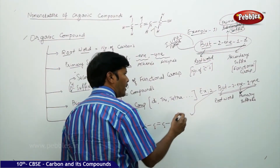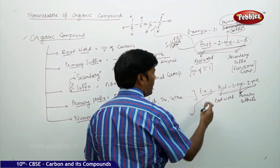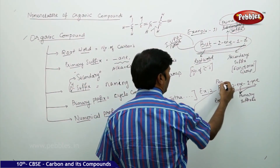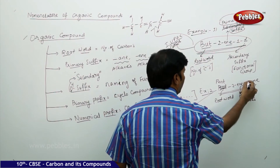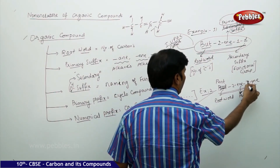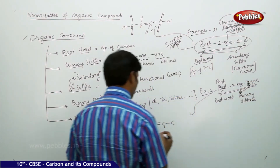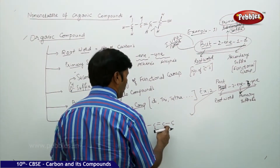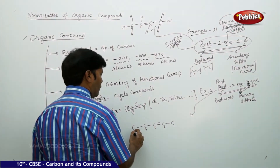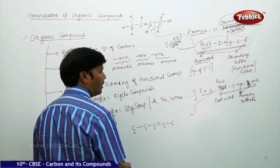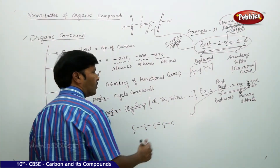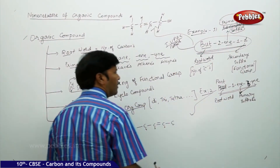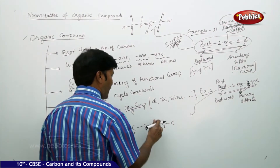Or you can change the root word from 'but' to 'pent' and make it pent-3-yne. So pent-3-yne with the double bond gives us pent-1-en-3-yne. By attaching one more carbon, we have 1, 2, 3, 4, 5. So the corrected name becomes pent-1-en-3-yne.